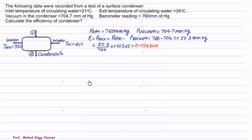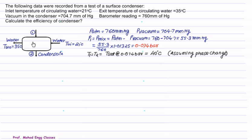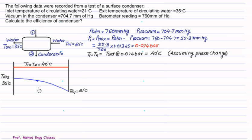Converting 55.3 mm of Hg to bar: 55.3/760 × 1.01325 ≈ 0.074 bar. Assuming only phase change occurs, the saturation temperature at approximately 0.07 bar from the steam table is about 40°C. So steam enters at 40°C and condensate leaves at 40°C. On a temperature plot, T1 = T2 = T_sat = 40°C.